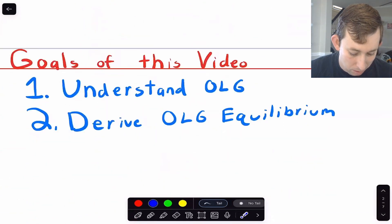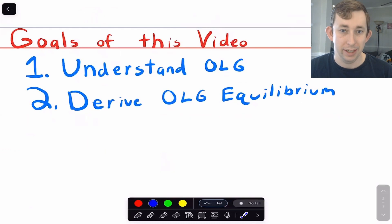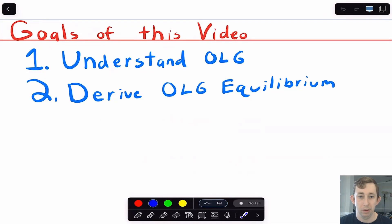In this video, all I want to do is help you understand how the OLG model, the Overlapping Generations Model, is set up, sort of the background, the intuition for the setup, and then we're going to derive the OLG equilibrium. Then the next couple of videos, we'll start tackling equilibrium, solving for equilibrium, talking about fiscal policy, all of those fun things. But today is just the setup. Timestamps are below if you would like to jump around, but let's go ahead and get right into it.